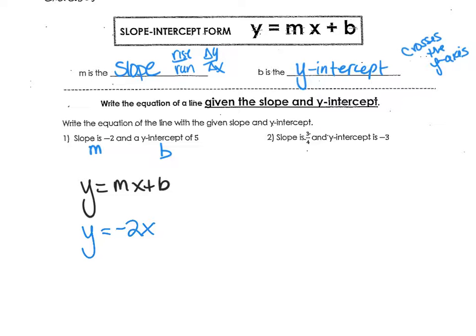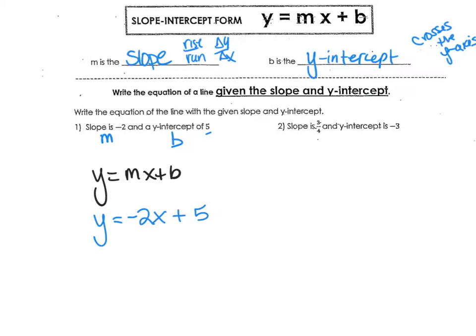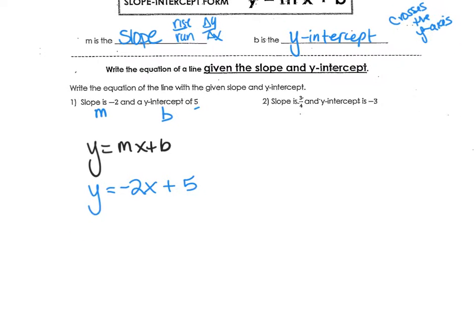So what's that going to look like if I plug those numbers in? Negative 2x plus 5, because it's a positive 5. So that's all you're doing, plugging those things in. As long as you know the x and the y, that's always part of the equation. The things you plug in for M and B. M for slope, B for y-intercept.